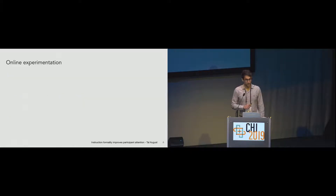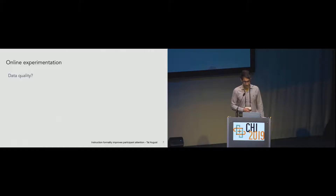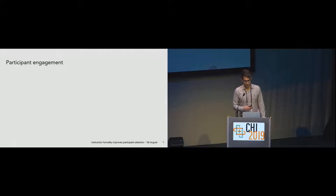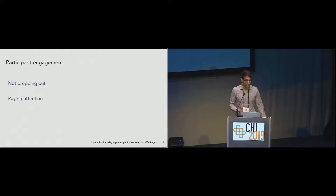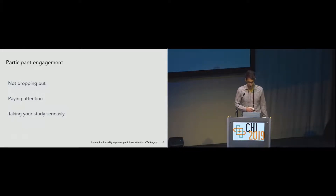A constant goal and struggle of online experimentation is obtaining high data quality, since recruiting participants online allows you a lot less control over the environment in which participants take your study. You don't know if there are screaming children in the background, if they have multiple tabs open, or if they get bored and leave. Ensuring participants stay engaged is difficult. There's very little you can do about participants dropping out, not paying attention, or just not taking your study seriously — maybe giving fake answers — and it's hard to tell what they're doing since they're not in the lab with you.